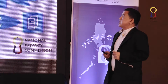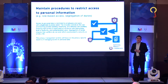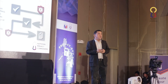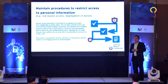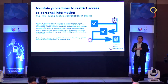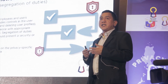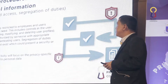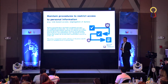Maintain procedures to restrict access to personal information. Access to personal data is restricted to employees and users with a legitimate business need. This includes controls in user provisioning, like adding, modifying, and deleting user profiles. Organizations should have a data privacy policy that allows only certain individuals to have user access at certain levels of access to personal information. Segregation of duties ensures that conflicts do not exist, which could present a security or privacy risk.